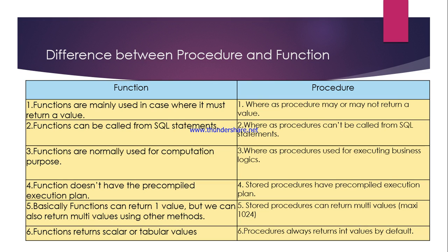A function must return a value whereas a procedure may or may not return a value. That means a function will definitely return a value because we have a return type inside the function, but we don't have any return type keyword inside the procedure. So it is mandatory to return a value for a function, but it is not mandatory for a procedure.